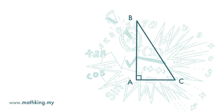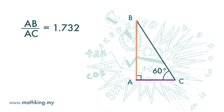Now let's look at this right angle triangle with an angle of 60 degrees. If we divide AB by AC — that is, we take the ratio of AB to AC — we will get 1.732, correct to three decimal places. The value of this ratio is fixed. As long as it is a right angle triangle with a 60 degree angle, the ratio of the opposite side to the adjacent side is fixed at 1.732.